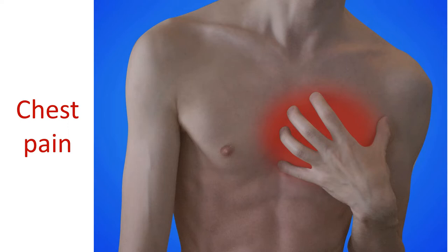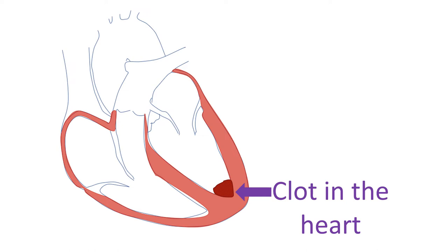In advanced cases with heart failure, fluid can collect under the skin especially in the legs. Myocarditis damages the heart muscle, which can be temporary or permanent, leading to defective pumping function of the heart and heart failure. Heart muscle damage can also initiate abnormal heart rhythms — cardiac arrhythmia — which can sometimes be quite dangerous. Very serious abnormalities of heart rhythm can rarely lead to cardiac arrest.